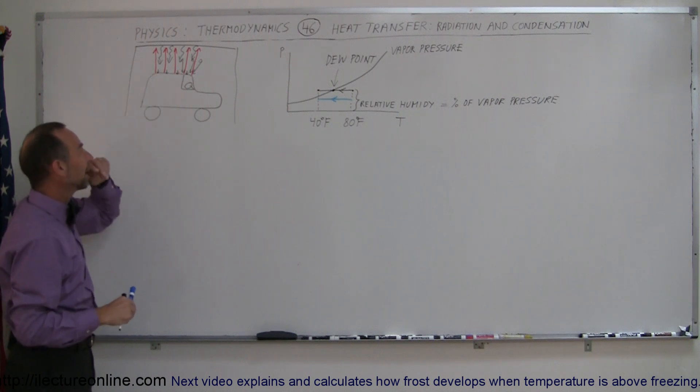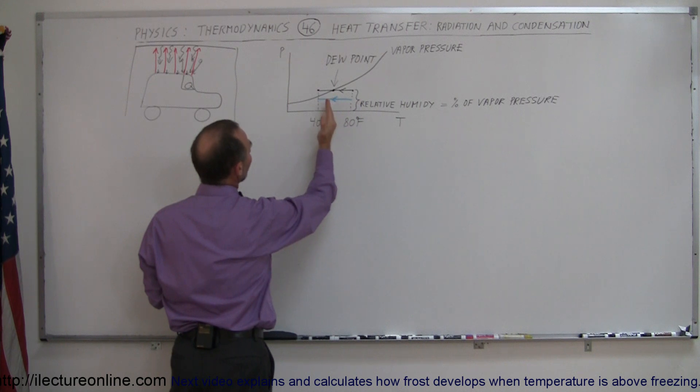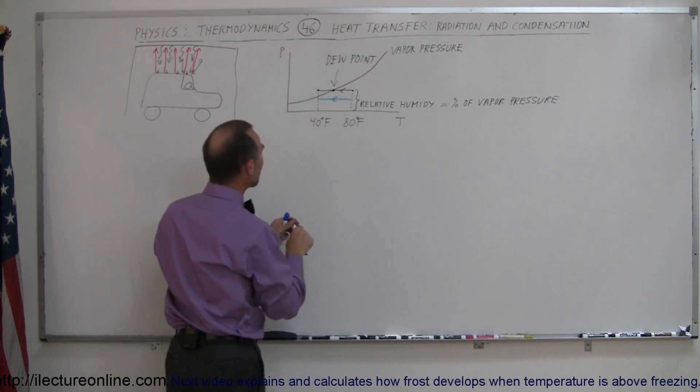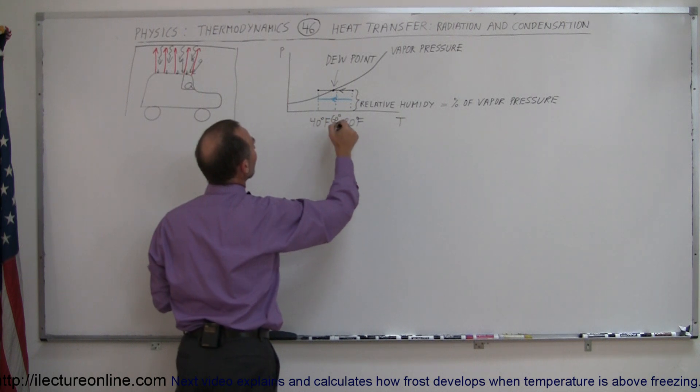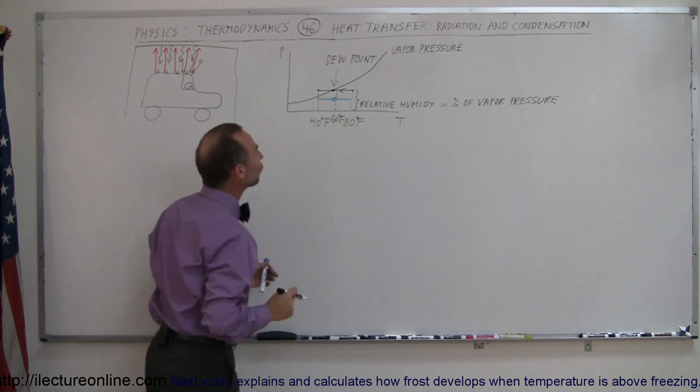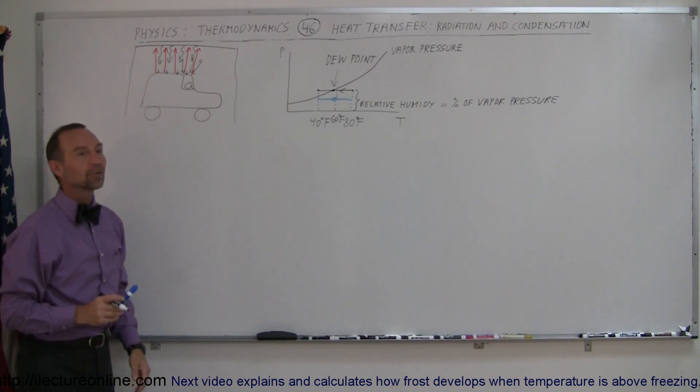And if that happens, then the temperature of the car will not drop down to the dew point. So maybe we can prevent the car from getting so cold. Maybe it will only be 60 degrees Fahrenheit and then we don't get to the dew point. And if we don't get to the dew point, then no condensation will collect on top of the surface.